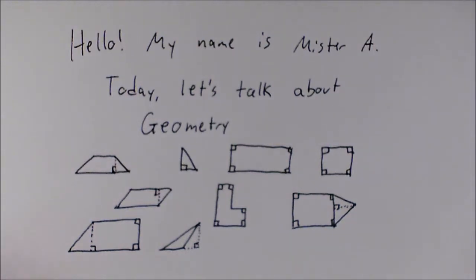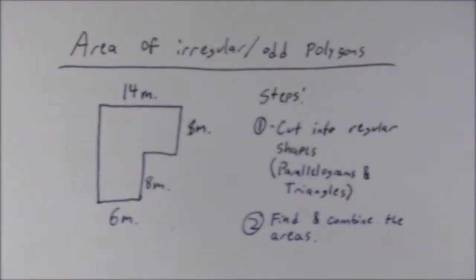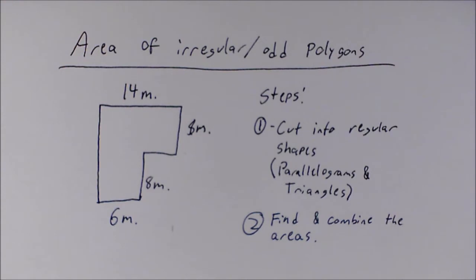Hello, my name is Mr. A. Today, let's talk about geometry — area of irregular and odd polygons. For the area of irregular and odd polygons, there is no set formula that exists, at least not one that can cover any type of irregular polygon.